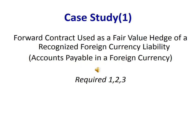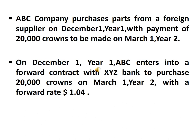The first case study is about forward contracts used as a fair value hedge of a recognized foreign currency liability, which is accounts payable in a foreign currency. APC company purchases parts from a foreign supplier on December 1st, Year 1, with payment of 20,000 crowns to be made on March 1st, Year 2.